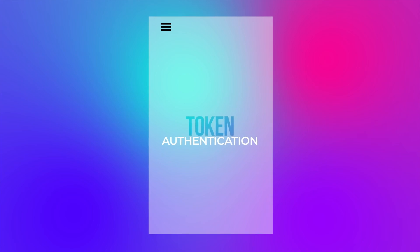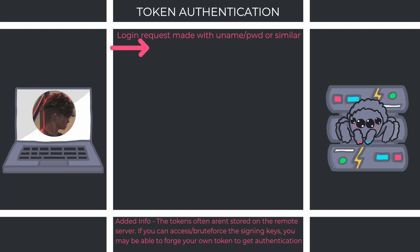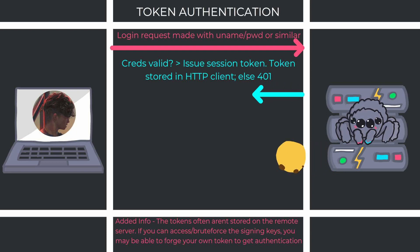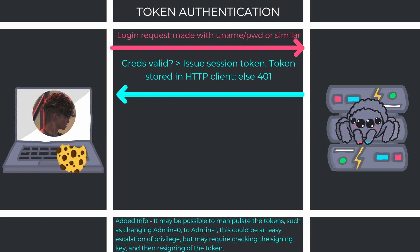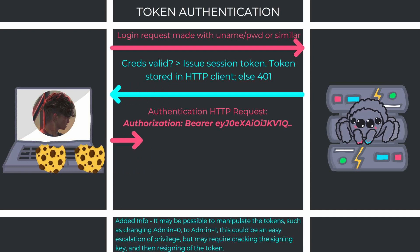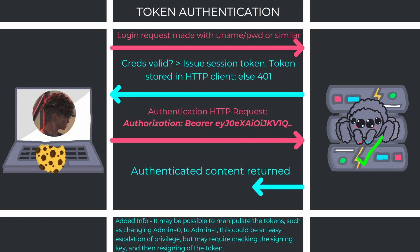Let's now take a look at token authentication — in this case JWT, JSON Web Token authentication. The client submits some form of authentication means such as a username or password. If the credentials are valid, the server will generate a token for the logged-in user's session and return it to the user. This is stored in the user's browser for subsequent requests. The client then issues further requests including the token, the server verifies its validity, and issues session-relevant content to the client.